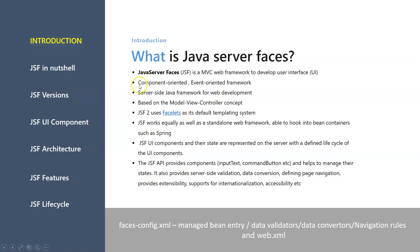JSF is component-oriented. When we say component-oriented, JSF provides its own set of components. Components are basically the fields or attributes on the screen - like input text boxes, output text boxes, labels, buttons, dropdown lists, checkboxes, and radio buttons. Those things are known as components, so JSF provides its own set of components to design the UI.